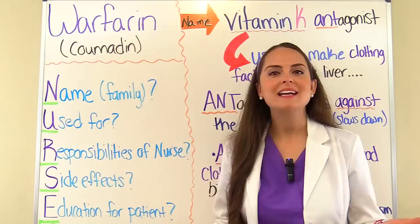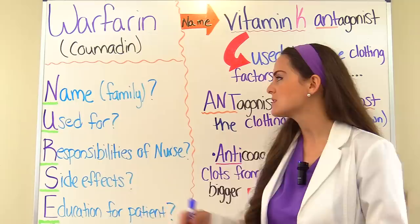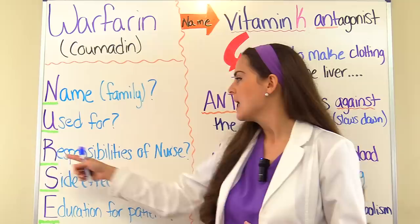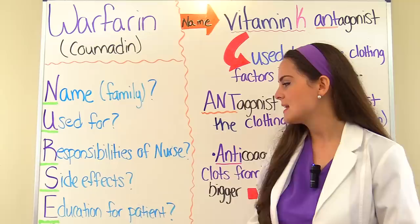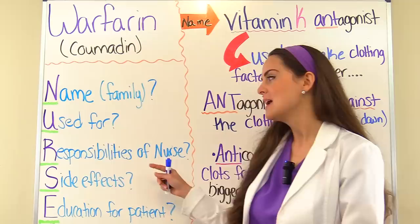As we've been studying these medications in this series, we've been remembering the word NURSE because this helps remind us of those important questions we need to ask ourselves when studying these medications for exams. N for name, specifically the family name of the drug. U for what it's used for — why are we giving this medication? R for responsibilities as a nurse. S for side effects. And E for education for the patient. NCLEX really loves to ask about the responsibilities and the education, so concentrate on those two parts.